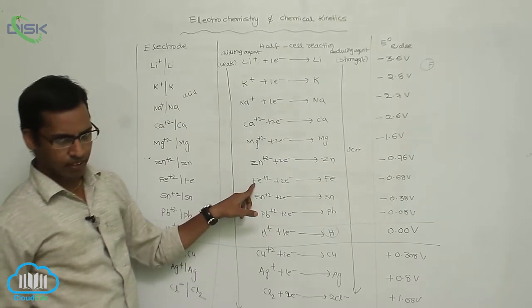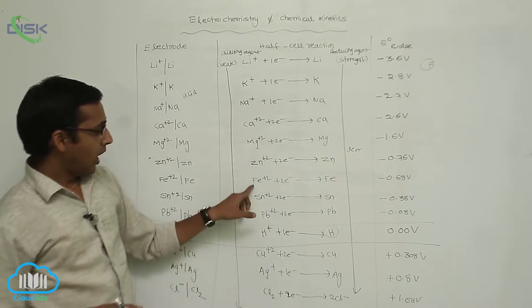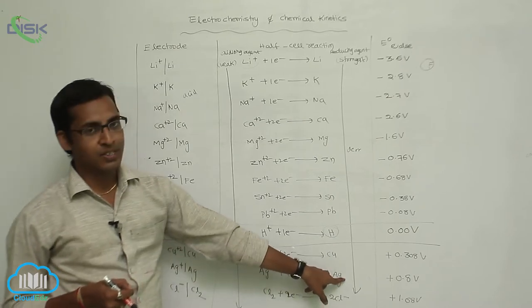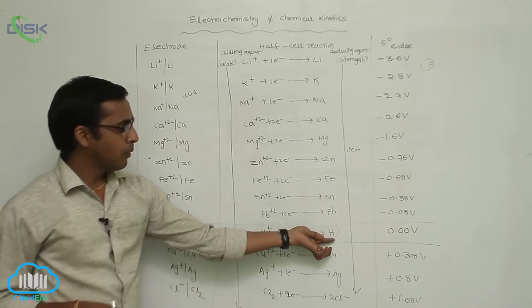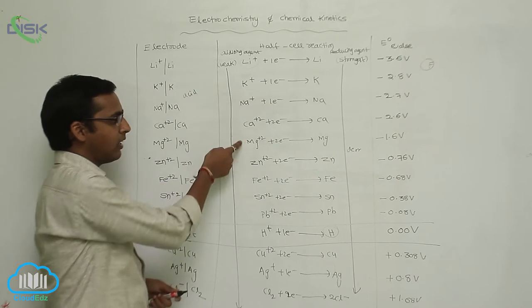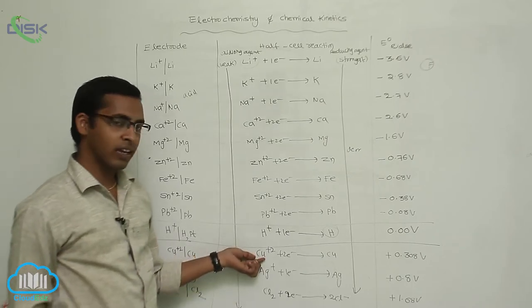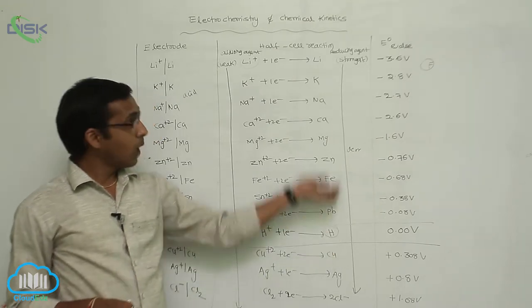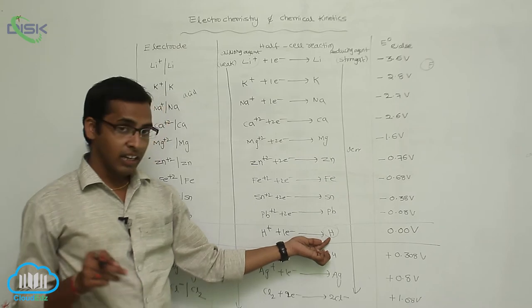For example, iron metal easily displaces copper metal in copper sulfate solution, or iron metal easily displaces Ag⁺ ions in silver nitrate solution. Metals at the top of the series easily displace hydrogen in acid solution and produce H⁺ ions. Metals above hydrogen are highly reactive elements, while those below are less reactive. Cu²⁺ ions do not produce hydrogen gas.